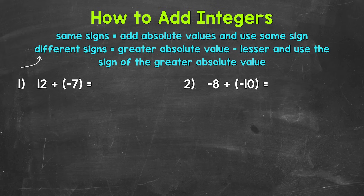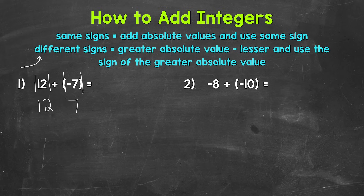Let's start by writing the absolute value of both 12 and negative 7. Remember, absolute value is the distance a number is from 0. The absolute value of 12 is 12. The absolute value of negative 7 is 7. Now we take the greater absolute value and subtract the lesser. These are already in order, so we can subtract. If the larger absolute value comes second, you can always switch the order to find the difference if need be. So 12 minus 7 is 5.